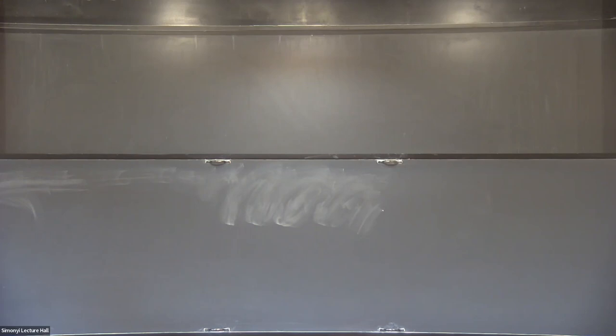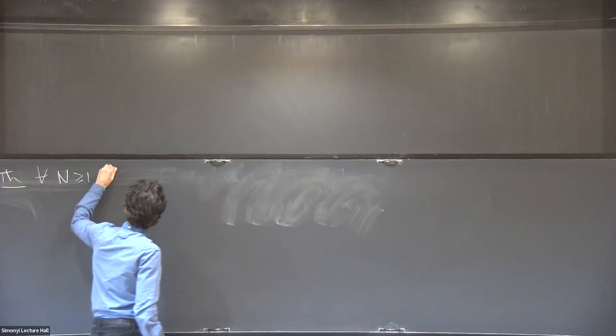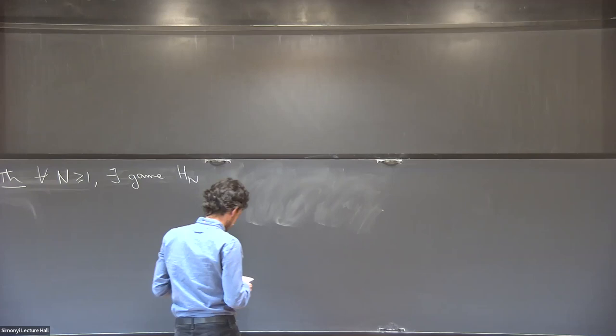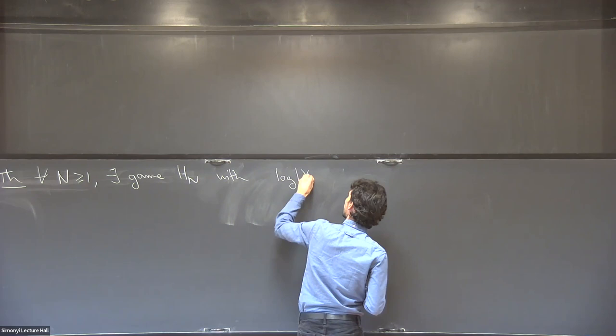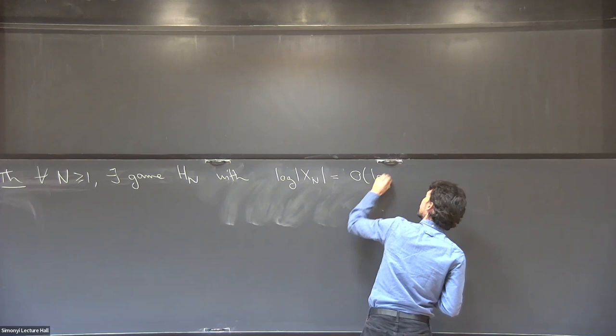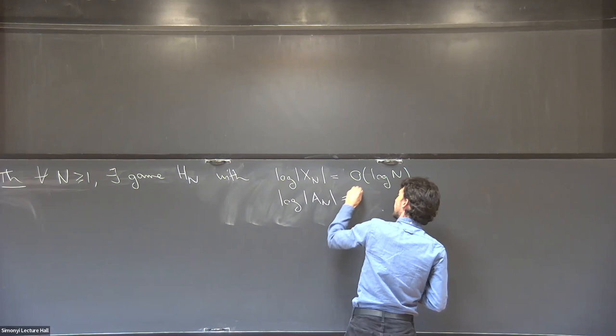Now let me state the theorem — a more precise statement that achieves the introspection step. For every integer N, there exists a game H_N with the following properties. The size of the question set is roughly log N, and the size of the answer set is N. The question set X_N has two distinguished questions — two special symbols X and Z in X_N.